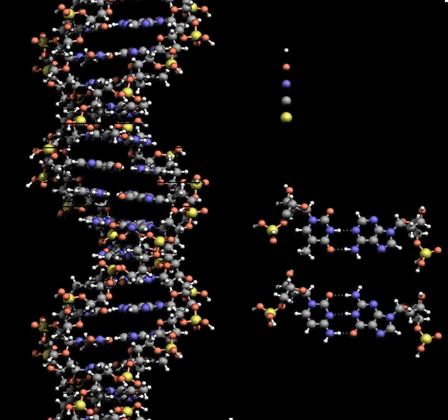Twin helical strands form the DNA backbone. Another double helix may be found tracing the spaces, or grooves, between the strands. These voids are adjacent to the base pairs and may provide a binding site. As the strands are not symmetrically located with respect to each other, the grooves are unequally sized.